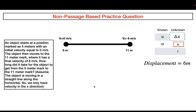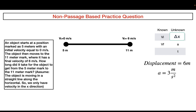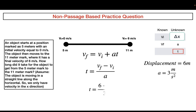Now that we know the displacement, we can find the acceleration using VF squared equals VI squared plus 2A times displacement. Plugging in all values and solving for A gives an acceleration of three meters per second squared. With the acceleration known, we can find the time using VF equals VI plus AT, giving T equals (VF minus VI) divided by A. Plugging in the values gives a time equal to two seconds — which is choice B.